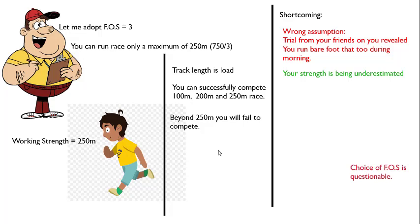Next, there is a question on how the factor of safety has been adopted. I adopted a factor of safety of three — but on what basis? There should be a certain reason behind it, so the choice of factor of safety is questionable. Also, I never considered your diet or mental health when assigning you for the race. Similarly, in concrete there are problems like creep and shrinkage that may not be considered during design. If your diet is not good or you are not in a good mental condition, you may not be able to run even 100 meters.